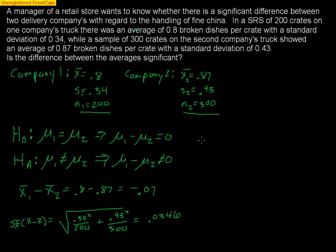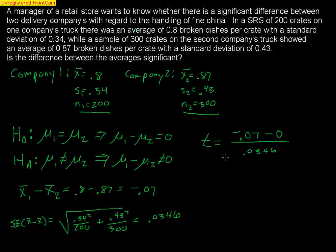The last thing we need is to calculate a T-score. We take the observed difference of negative 0.07, subtract the expected difference of zero (since we're assuming no difference under the null), and divide by the standard error of 0.0346. Unlike the difference of two proportions, you do not have to pool when working with means — the AP guidelines confirm it's always acceptable not to pool with sample means. Our T-score comes out to negative 2.0231.